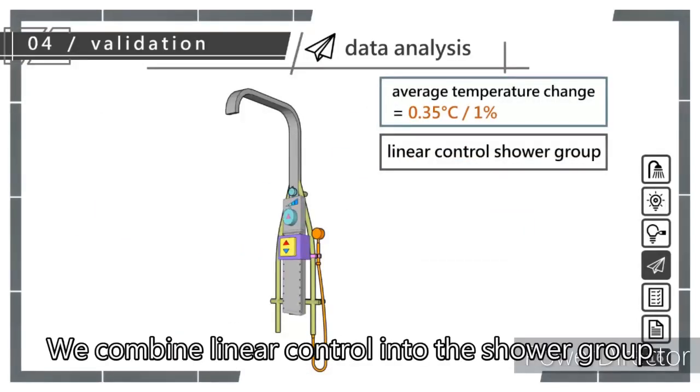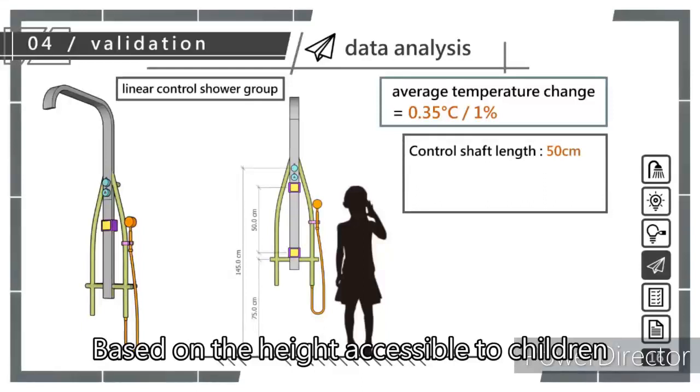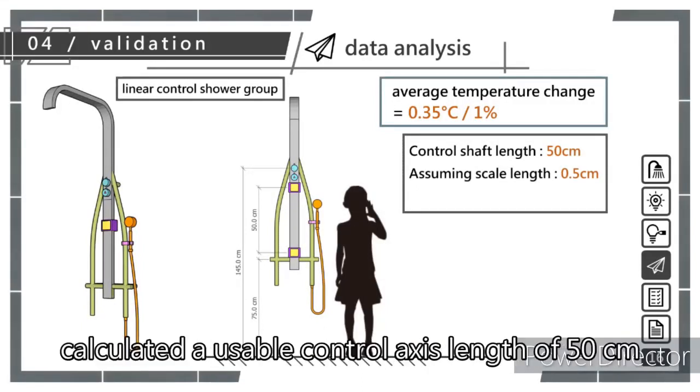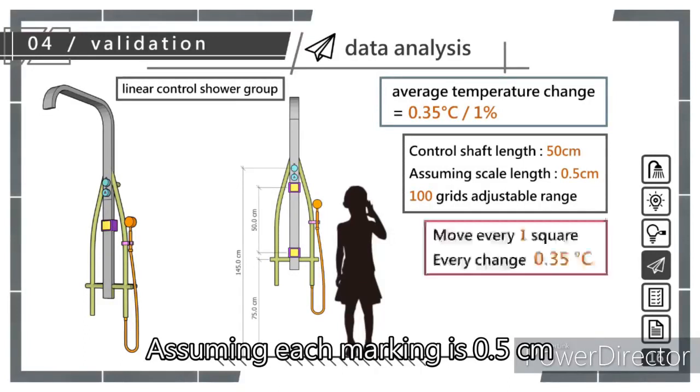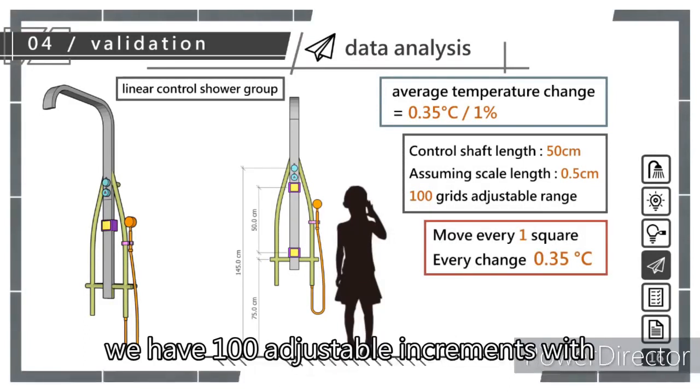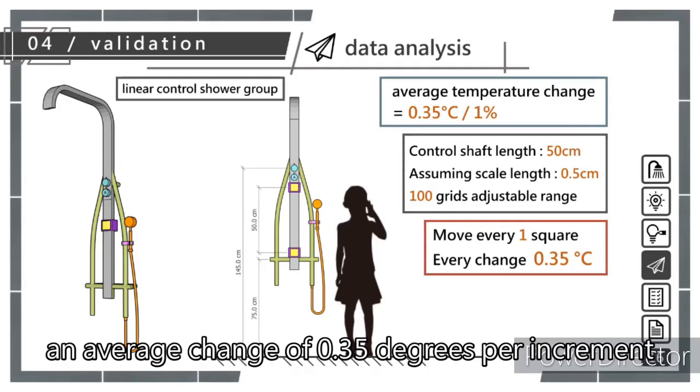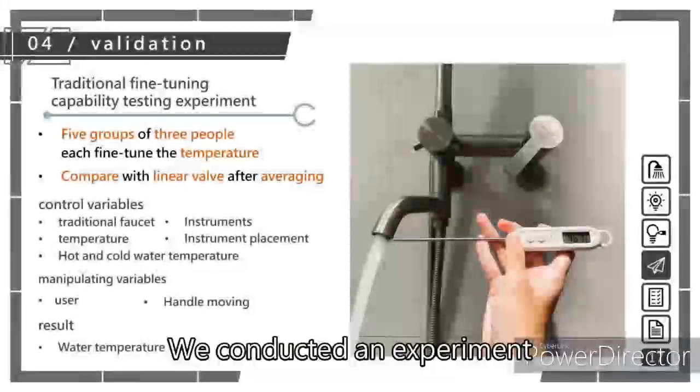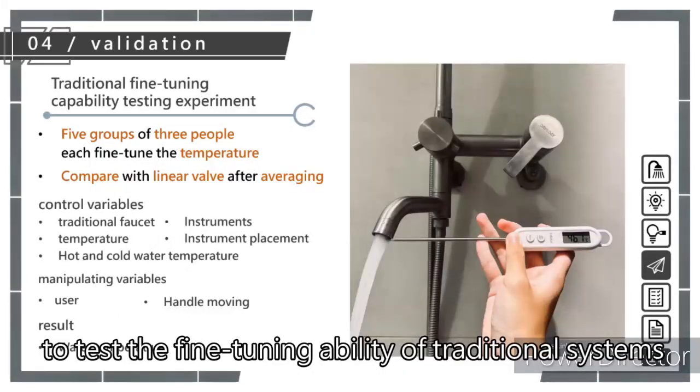Next, we combined linear control into the shower group. Based on the height accessible to children and the outlet position, we calculated a usable control axis length of 50 cm. Assuming each marking is 0.5 cm, we have 100 adjustable increments. With an average change of 0.35 degrees per increment, we conducted an experiment to test the fine-tuning ability of traditional systems.